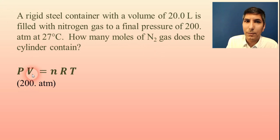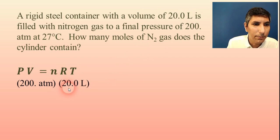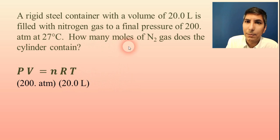Now V is the volume. Same thing. There's not an initial and a final. It's just a volume, and it's given right to us here in the problem. The volume is 20.0 liters. So I'm going to plug that in for V. Now N stands for the moles, and that's what we're solving for. It says how many moles. So we're going to use that as our unknown.